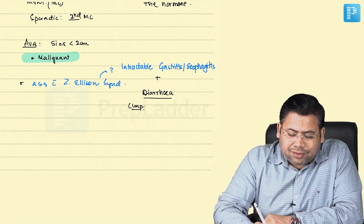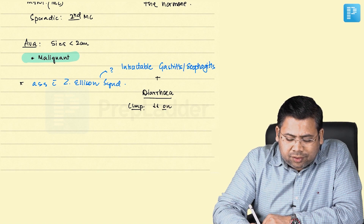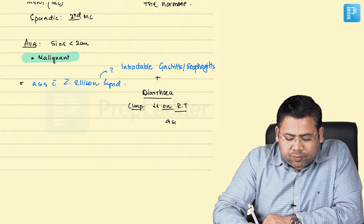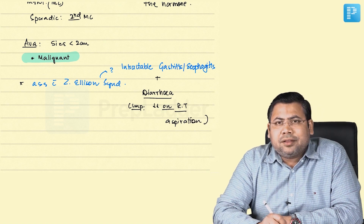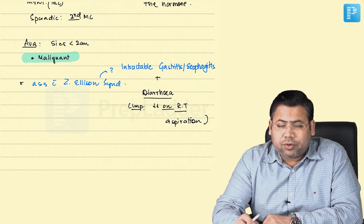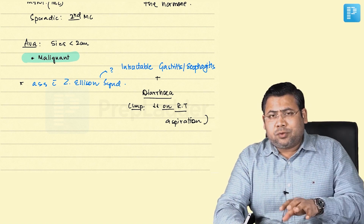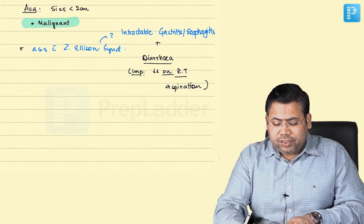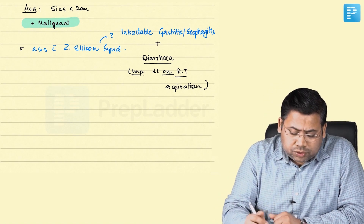An important feature of this diarrhea is that it decreases on Ryle's tube aspiration. This is very important because it confirms the diarrhea was due to acid entering the small intestine and neutralizing the pancreatic juices.